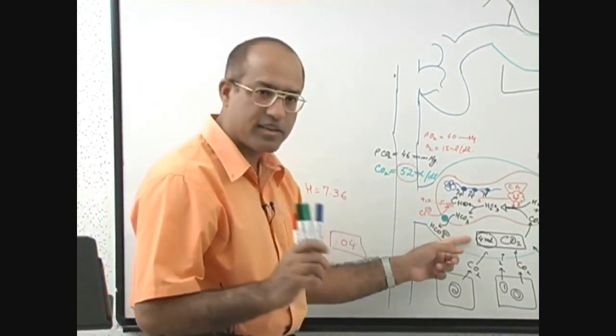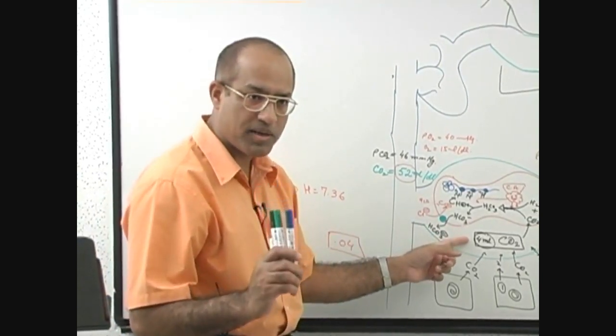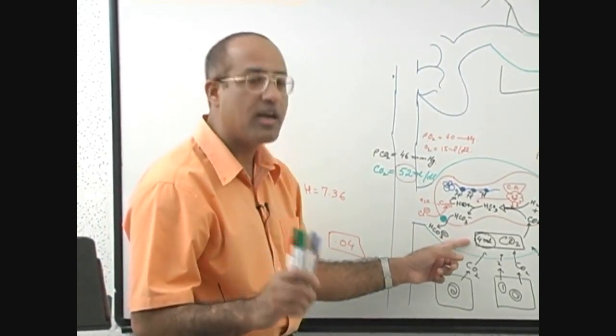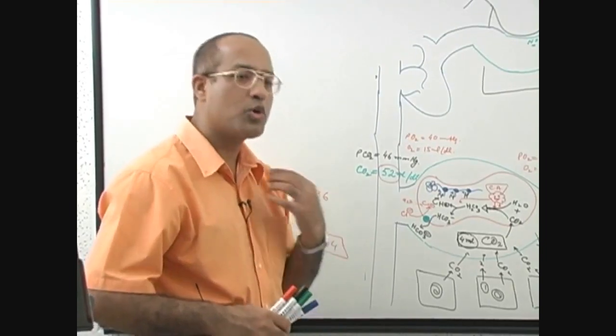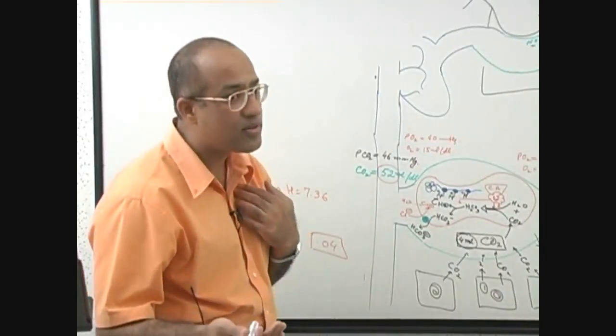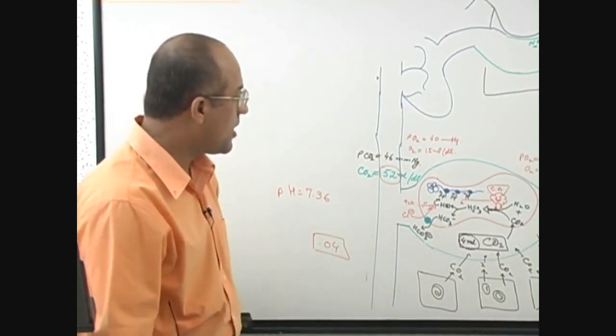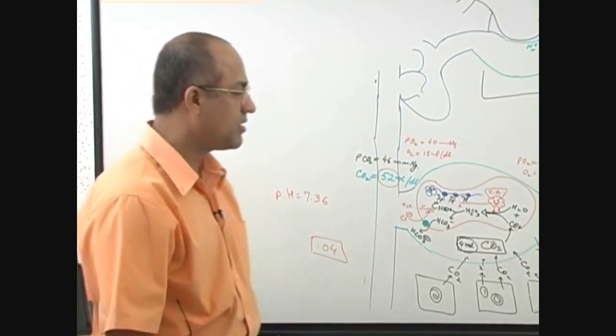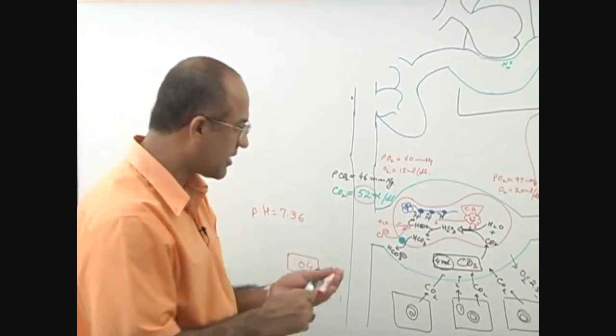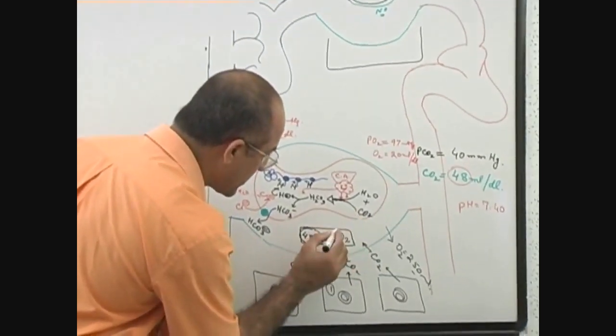90% of the carbon dioxide is transported from the peripheral tissue to the lungs in the form of bicarbonates. But actually, some of it—about 5% of carbon dioxide—90% is going there, now we can divide it.